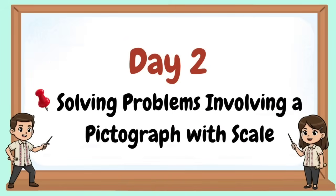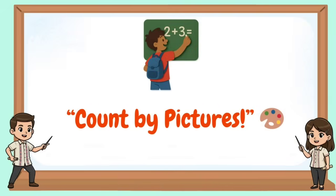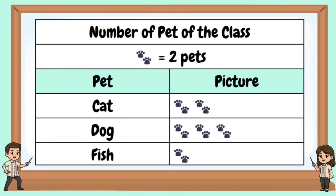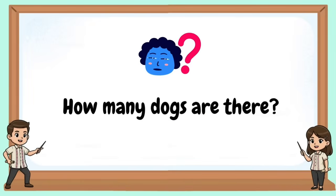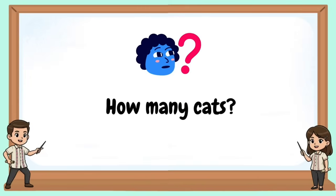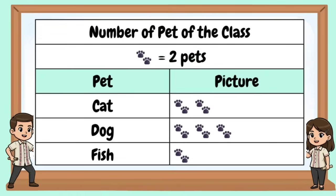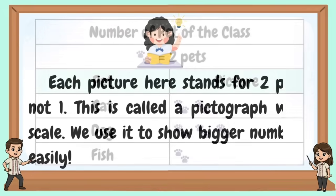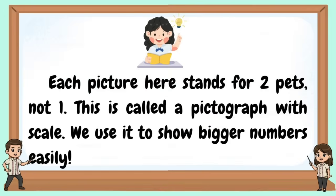Welcome to our Day Two: Solving Problems Involving a Pictograph with Scale. Count by pictures. Number of pets of the class — each paw is equal to two pets. How many dogs are there? Each picture here stands for two pets, not one. This is called a pictograph with scale. We use it to show bigger numbers easily.